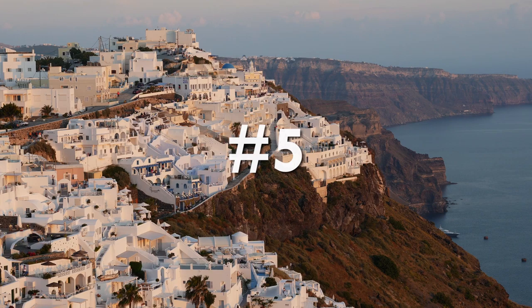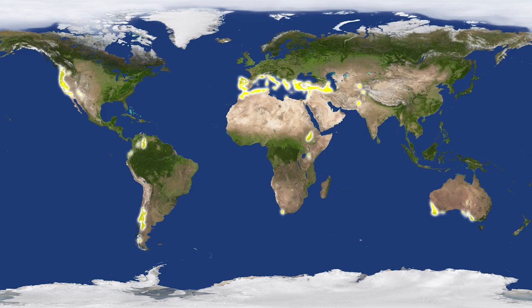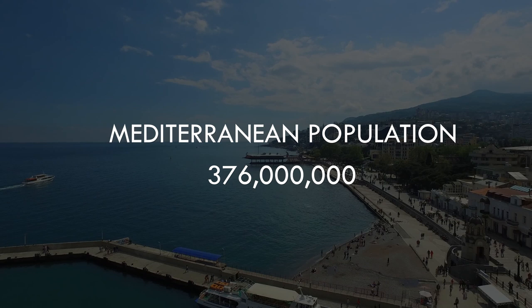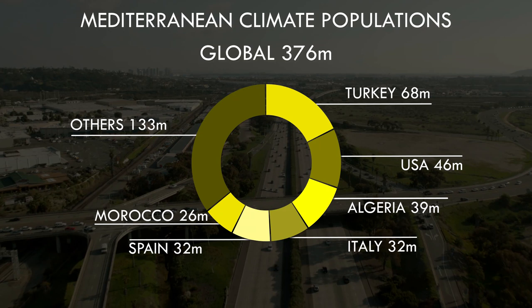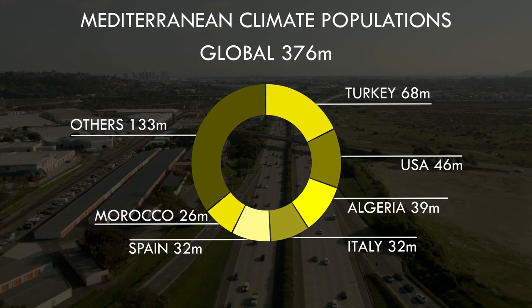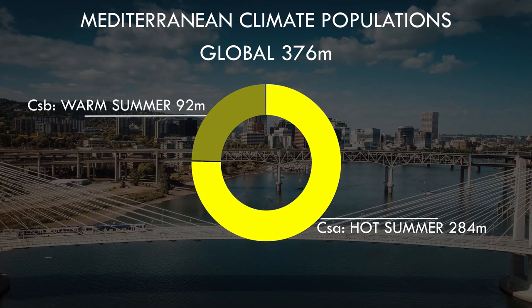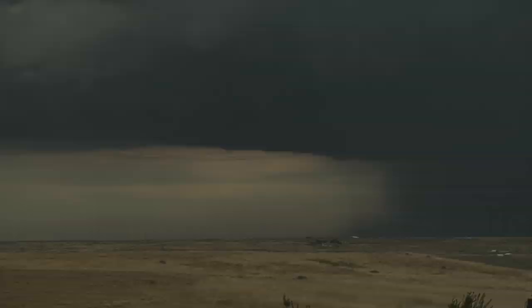At number 5 in our countdown, we reach the Mediterranean and the copies of its unique dry-summer rainfall pattern across most continents, home to almost 400 million people. The actual Mediterranean dominates the population list, with only the extensive dry-summer pattern of the western coast of the United States providing numbers to counter those of the populous countries with Mediterranean shorelines. There are two Koppen subtypes separated by summer temperatures, and the classic Mediterranean CSA hot-summer type dominates in terms of population as it does with land area.